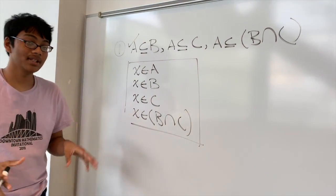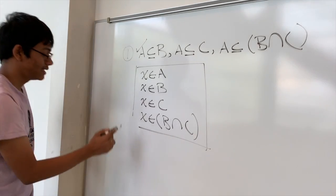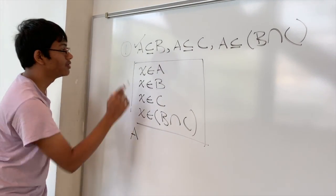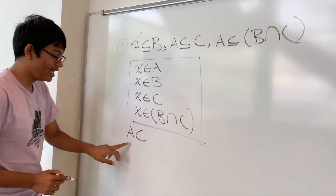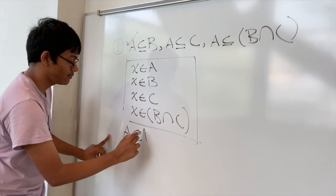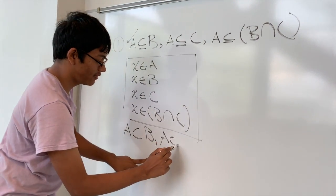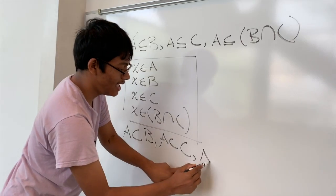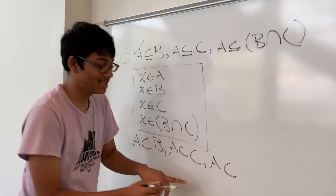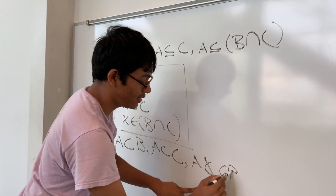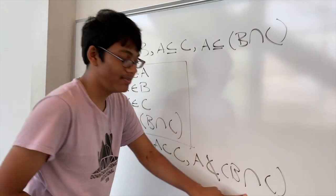Now let's go on to proving the second part of this problem. The second part asks us to prove the following statement: if A is a proper subset of B and A is a proper subset of C, then A is not necessarily a proper subset of the intersection of sets B and C.